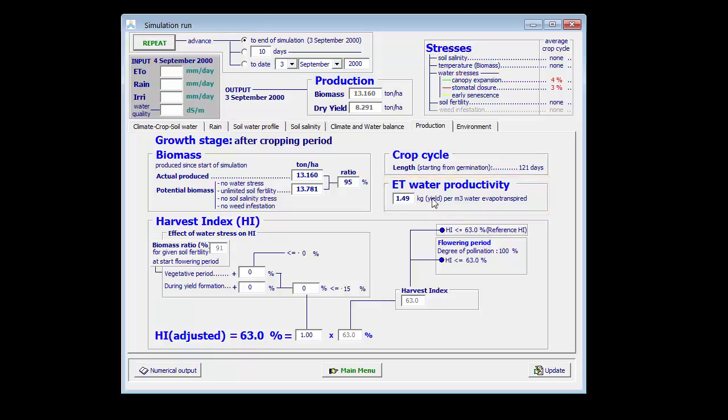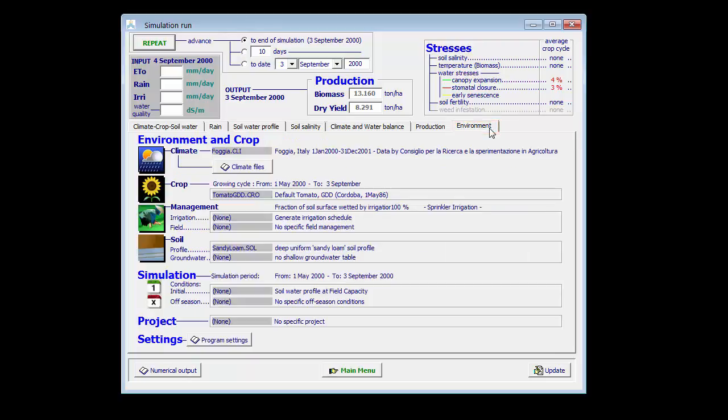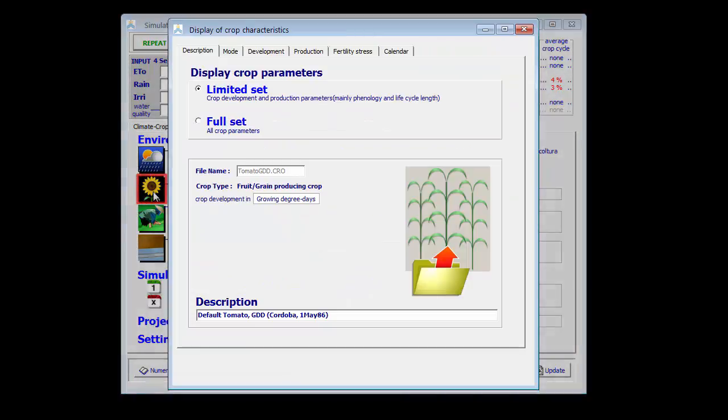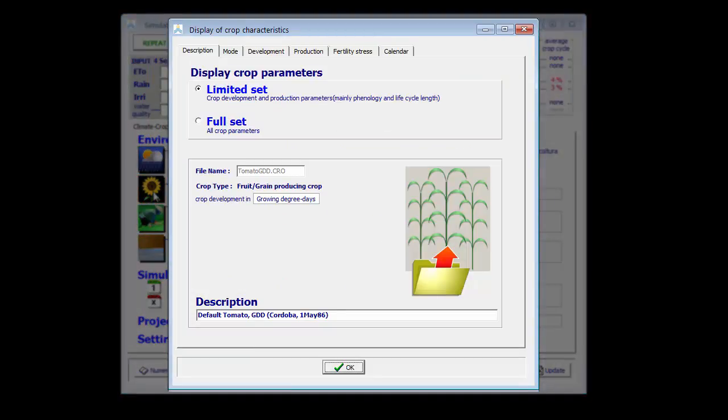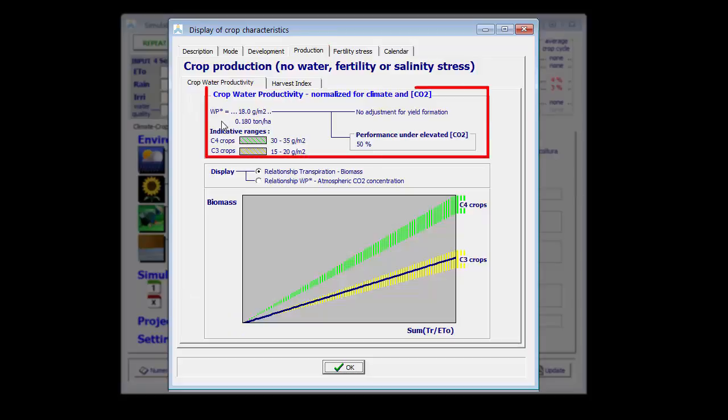The biomass water productivity is a crop parameter, conservative crop parameter. In the environment tab sheet I can see what I am simulating. The crop parameters of the tomato crop can be displayed by clicking on the icon.